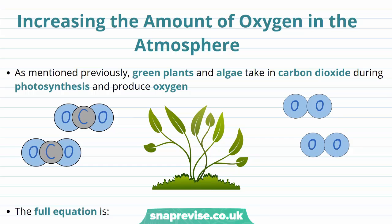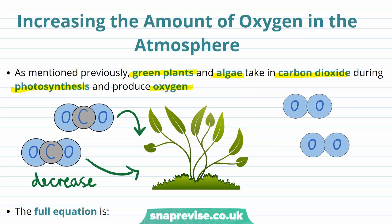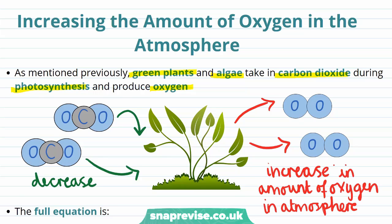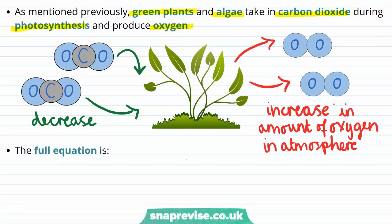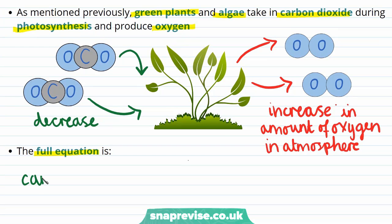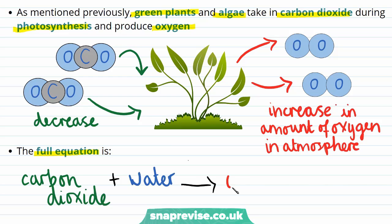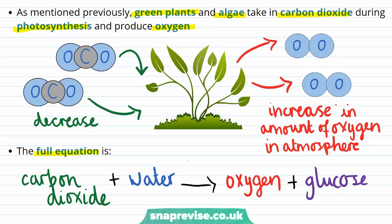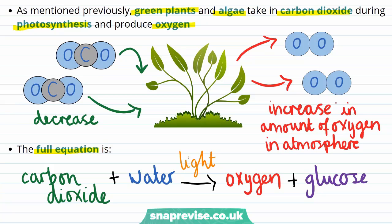One way in which carbon dioxide can be absorbed is by plants during photosynthesis. Green plants and algae take in carbon dioxide in order to produce oxygen, decreasing the amount of carbon dioxide in the atmosphere. But the process produces oxygen, therefore increasing the amount of oxygen in the atmosphere. Photosynthesis is used by plants to create energy, and we can write out the full equation: a plant takes carbon dioxide and water and uses this to form oxygen and the sugar glucose. Glucose is broken down in respiration to provide the plant with energy. The process of photosynthesis requires light, which the plant gets from sunlight.